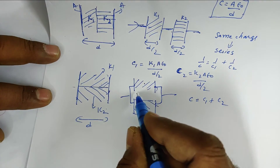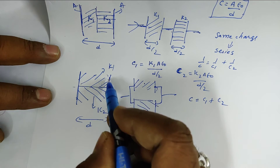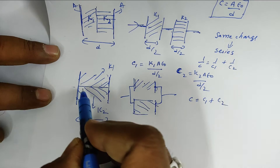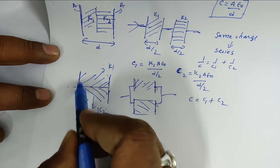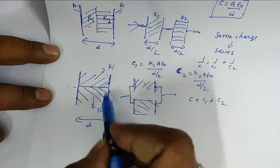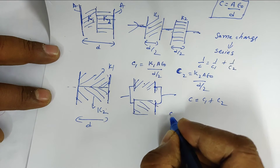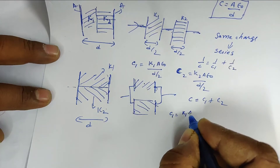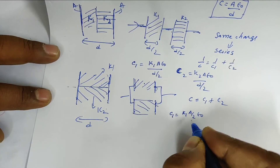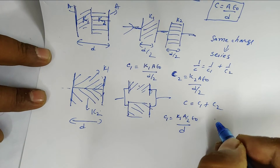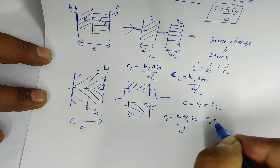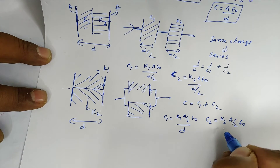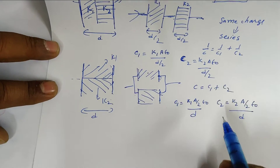Each section has half the area, A/2, and the same plate separation D. So C1 = K1·(A/2)·ε₀/D and C2 = K2·(A/2)·ε₀/D. The total capacitance for the parallel arrangement is C = C1 + C2.